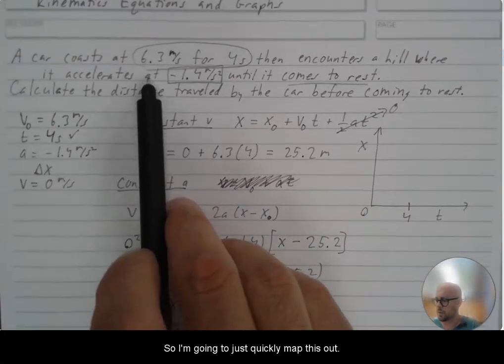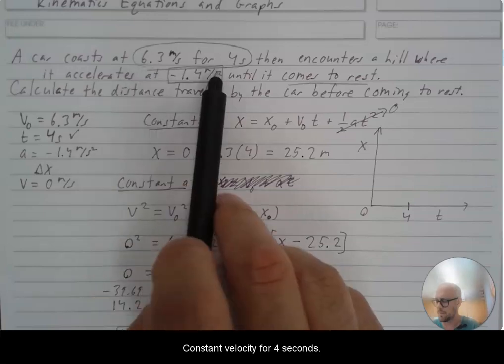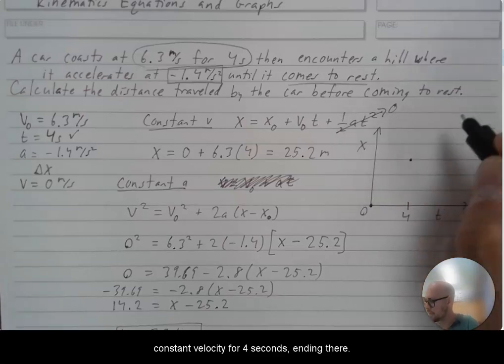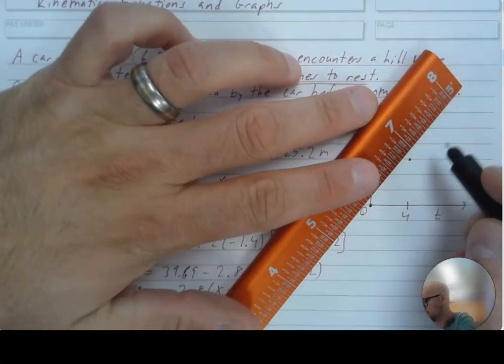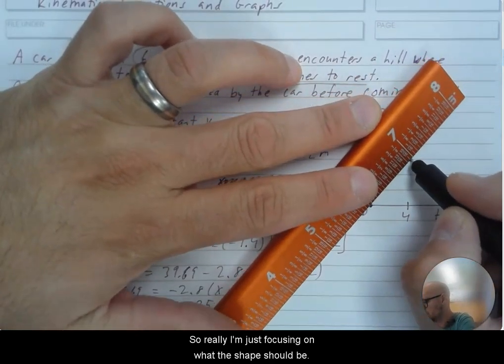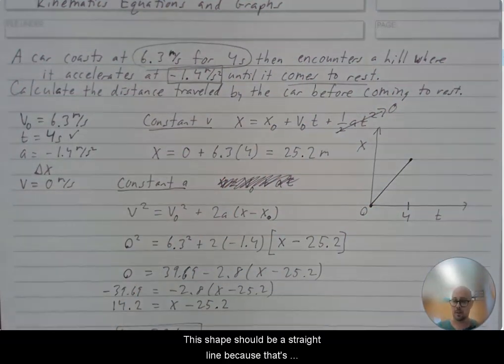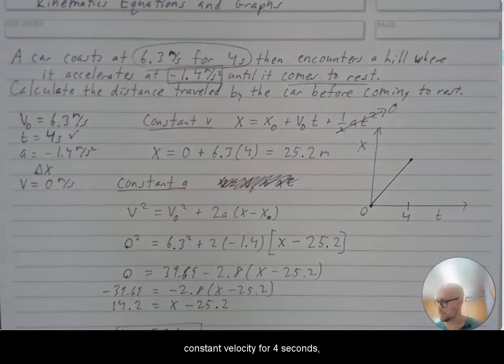So I'm going to just quickly map this out. Constant velocity for four seconds. I'm going to start at zero. And then I'm going to do constant velocity for four seconds ending there. So really, I'm just focusing on what the shape should be. This shape should be a straight line because that's constant velocity for four seconds.